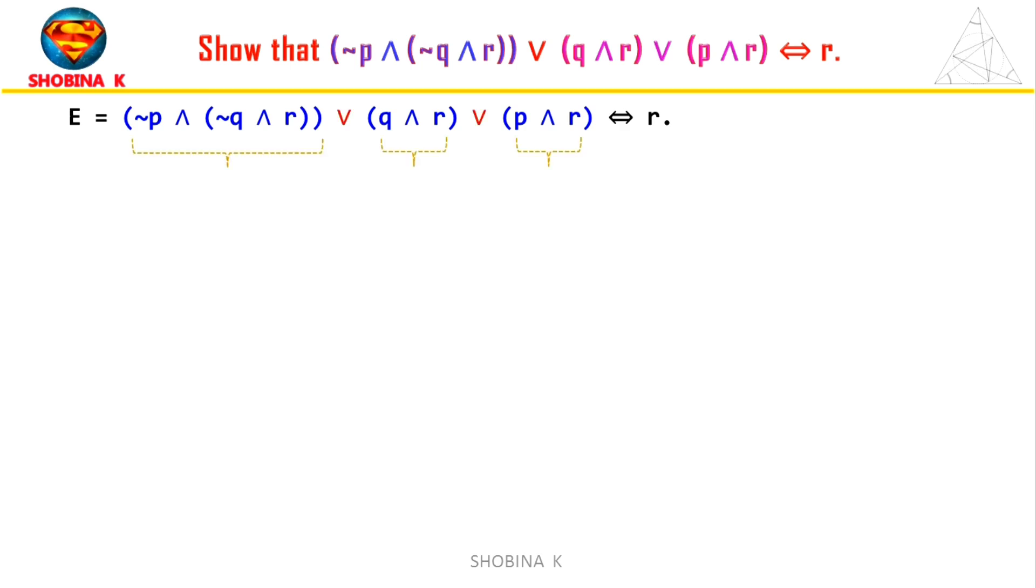Looking closer to the left side, the original expression is composed of three sub-expressions connected by OR operations. Let's start with our original expression: not p and not q and R, OR q and R, OR p and R, which we will denote as E. So our goal is to show that the expression is equivalent to R.